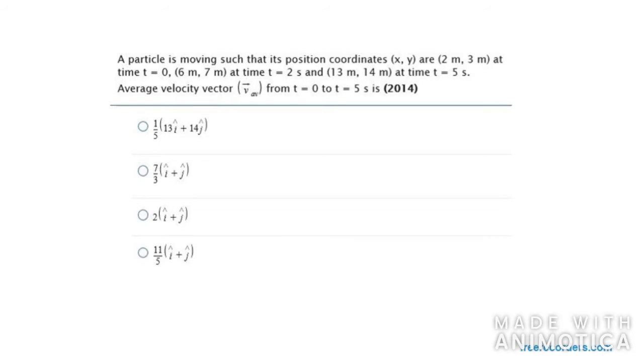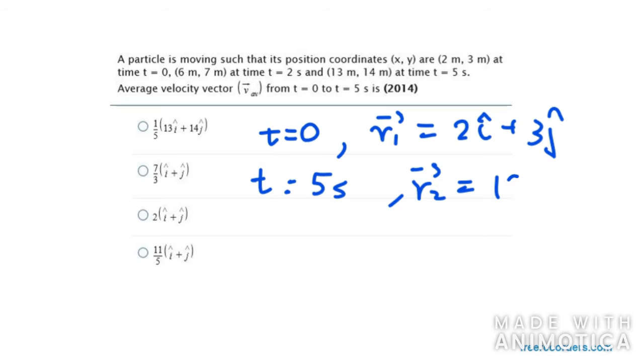Now we have another question. The question says we have position coordinates x, y at time t equals 0 as 2 meter, 3 meter, at 6 meter, 7 meter at time t equals 2 seconds, and 13 meter, 14 meter at t equals 5 seconds. We need to find average velocity. First of all I will write t equals 0 and the position vector for the same. So r1 will be 2i cap plus 3j cap. For t equal to 5 seconds we have r2 as 13i cap plus 14j cap.